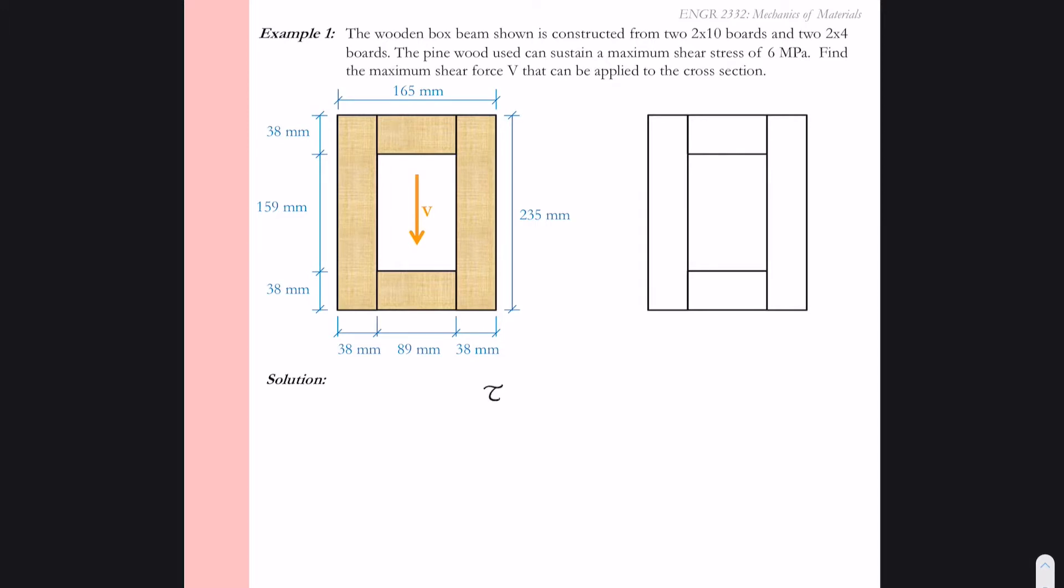Of course we're going to use this shear stress formula tau equals VQ over IT. Now the question says the maximum allowable shear stress is 6 megapascals, so that's going to be tau. So tau is our max shear stress.